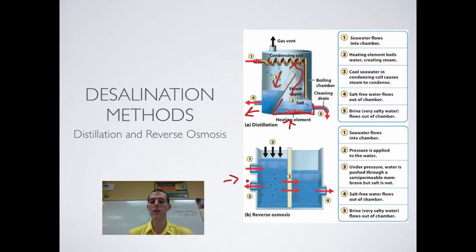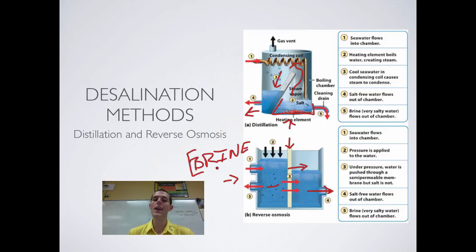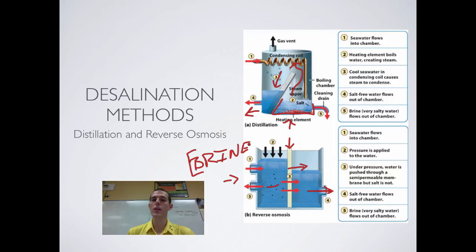The other option is reverse osmosis. In reverse osmosis, you have a semi-permeable membrane that allows water through but not salt. You run water into a chamber, pressurize it, and push it through the membrane, leaving the salt behind and producing fresh water. The major drawback is the leftover brine — a super salty salt solution. Disposing of brine on land can cause soil salinization, preventing plant growth. Disposing of it in a closed pond ruins that habitat. Even dumping it in the ocean causes localized habitat disruption due to its extreme saltiness. Both desalination processes are effective but both have significant drawbacks.